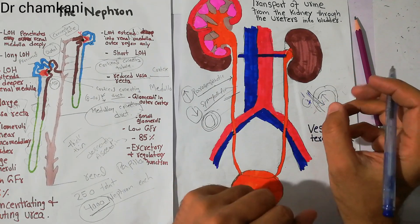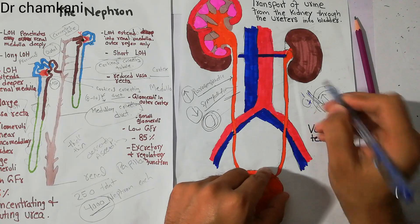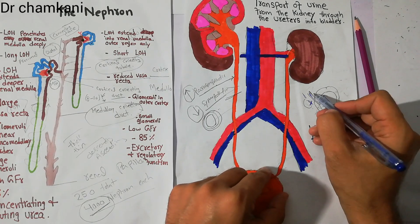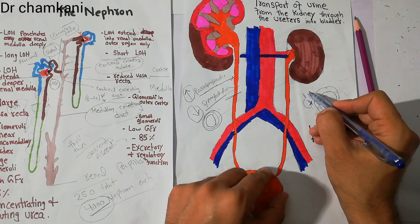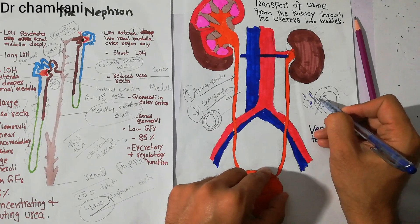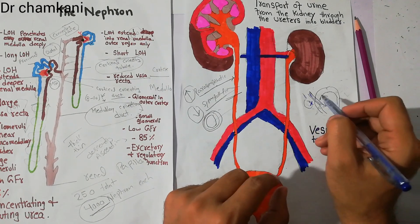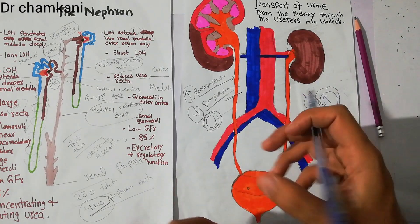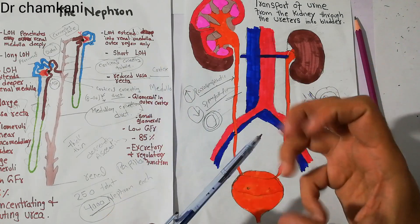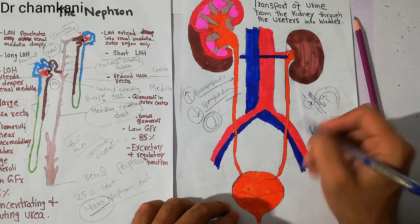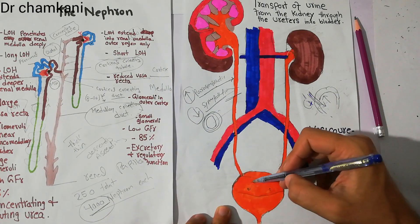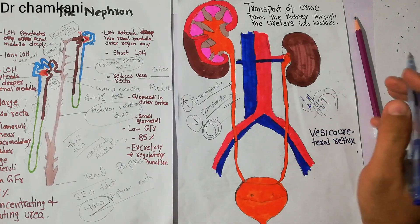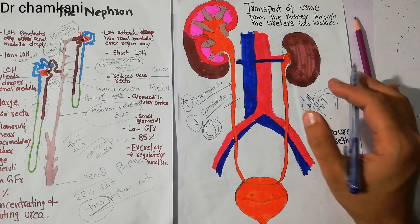Sometimes in some kids, this area is not well developed, and the distance which the ureter moves inside the wall of the bladder is less than normal. In those kids, when the bladder contracts, there is some movement of urine from the bladder into the ureter, and this is known as primary vesico-ureteral reflux.